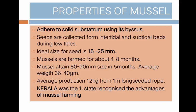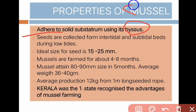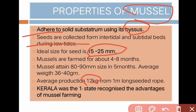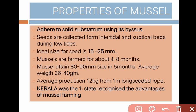Next are the properties of mussel farming. Mussels adhere to solid substances using a byssus thread. Seeds are collected from intertidal and subtidal beds during low tides. The ideal size of seed should be 15 to 25 mm. Mussels are farmed for about 4 to 8 months and can attain a size of 80 to 90 mm in 5 months with an average weight of 36 to 40 grams. Average production is 12 kg from 1 metre long seeded rope. Kerala was the first state to recognize the advantages of mussel farming.